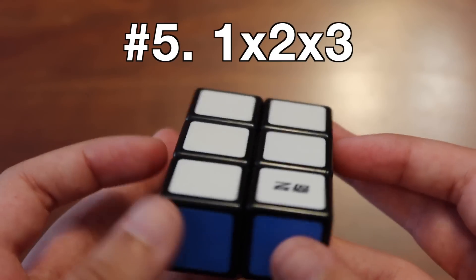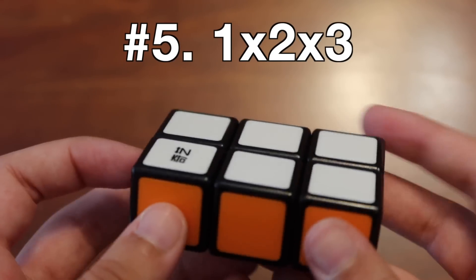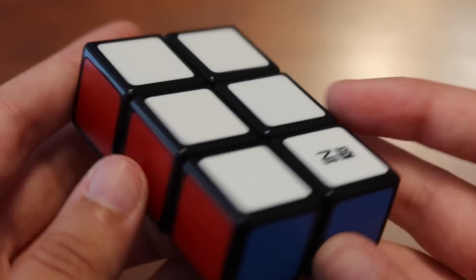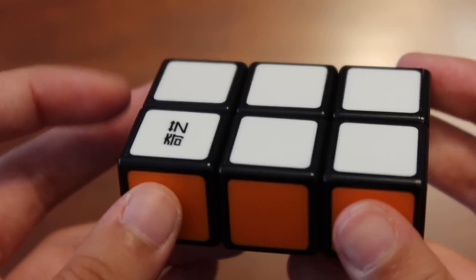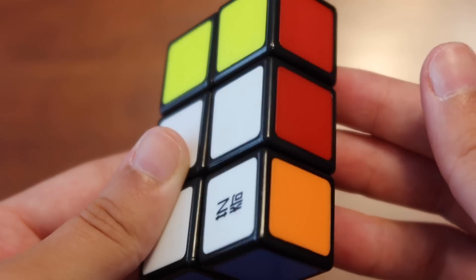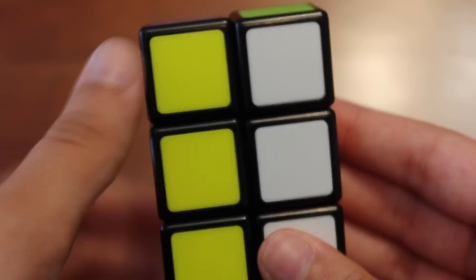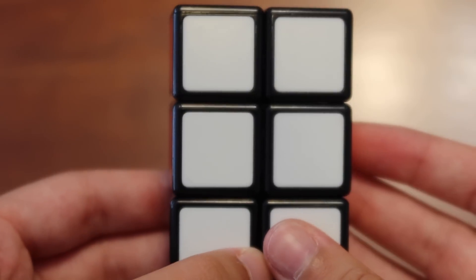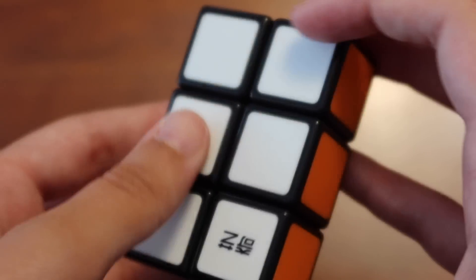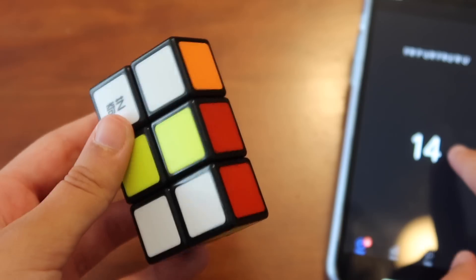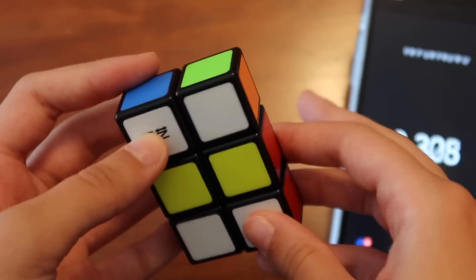In number five, we have the 1x2x3. This is a pretty fun, very easy cuboid. It can usually be solved in about six moves or less. Very intuitive, doesn't require learning any algorithms or anything. Turns great as well. So overall, just a super easy cube, but really fun.